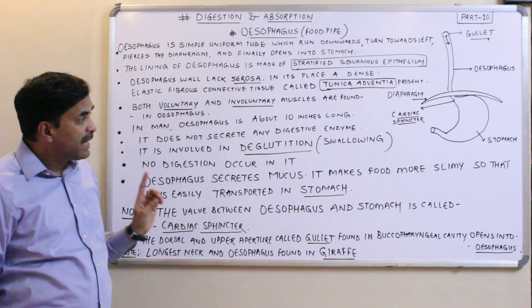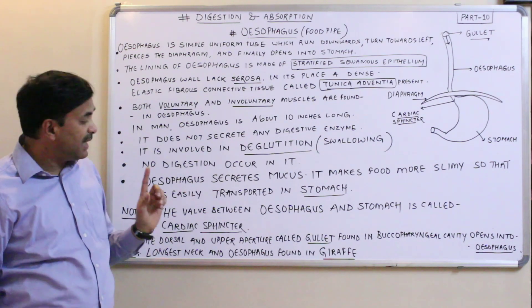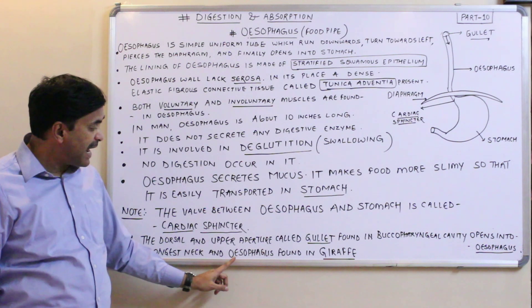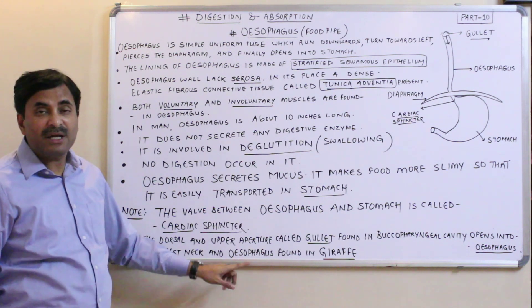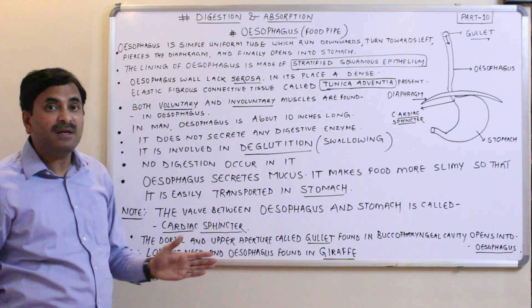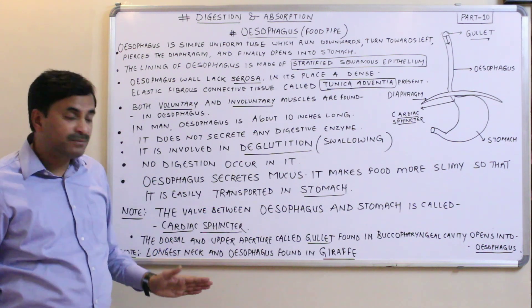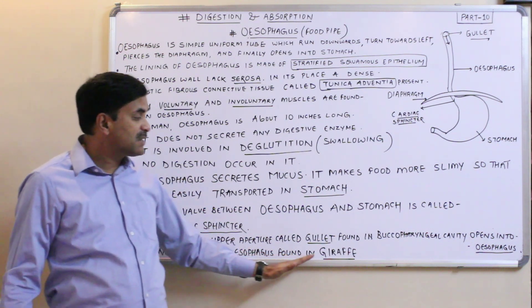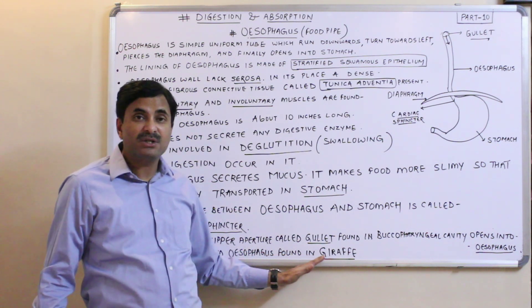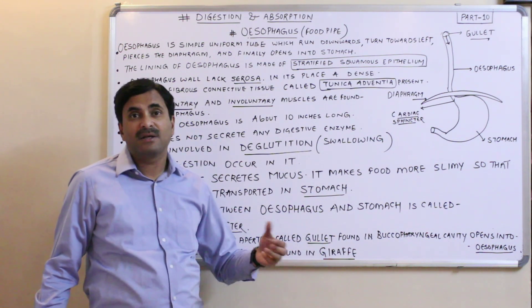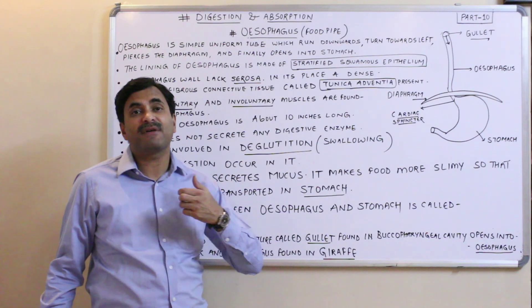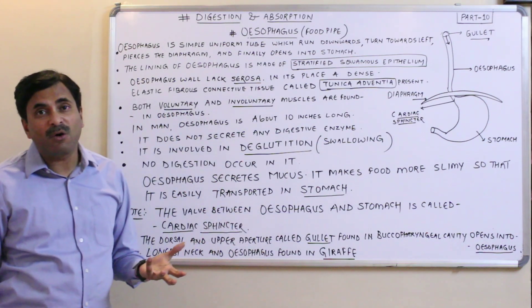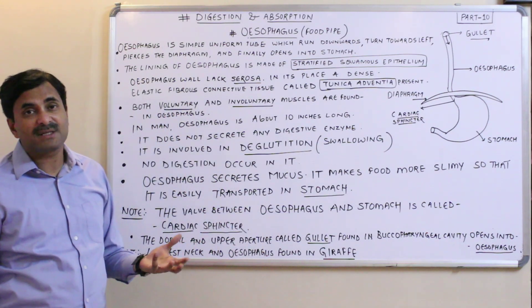The longest neck and esophagus in the entire animal kingdom is found in the giraffe. This is a well-known fact — the giraffe has a very long neck and a correspondingly very long esophagus.